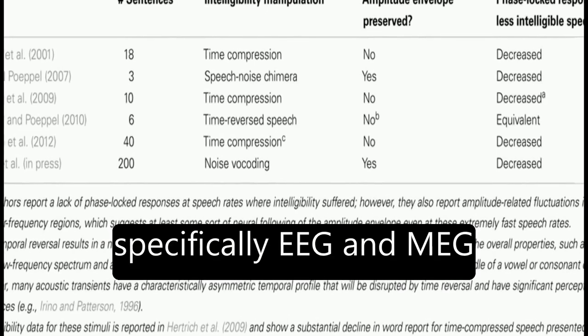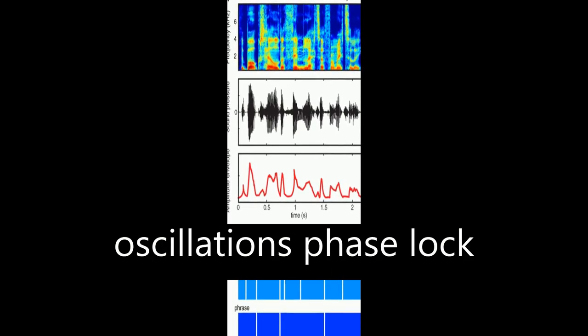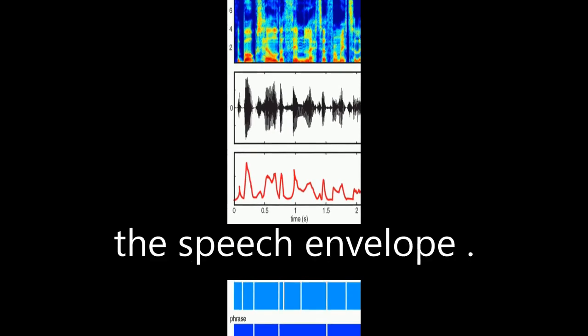Neuroimaging data, specifically EEG and MEG, demonstrate that ongoing cortical oscillations phase lock to low-frequency information, 4 to 8 Hz, in the speech envelope.